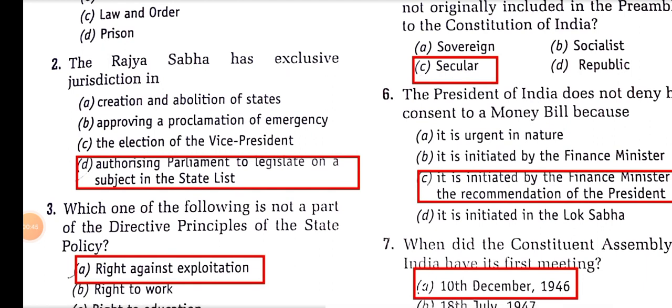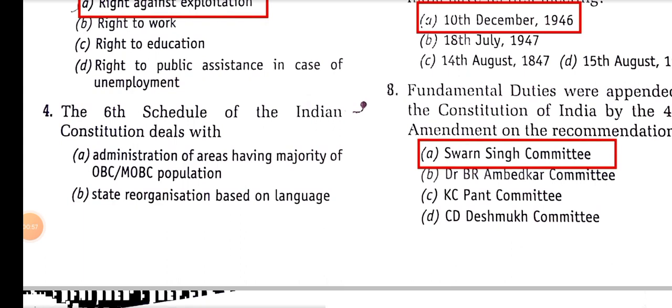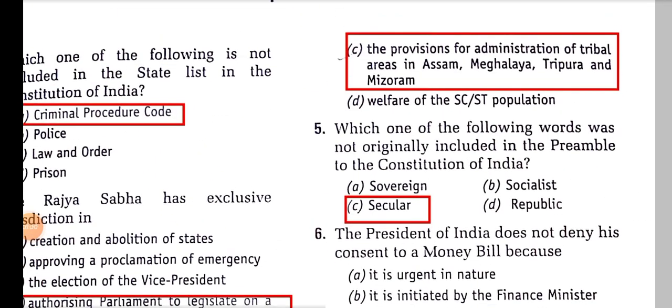Which one of the following is not a part of the Directive Principles of State Policy? Right against exploitation is part of Fundamental Rights under Articles 23 and 24. The Sixth Schedule of the Indian Constitution deals with the provision of administration of tribal areas in Assam, Meghalaya, Tripura, and Mizoram — four states only.